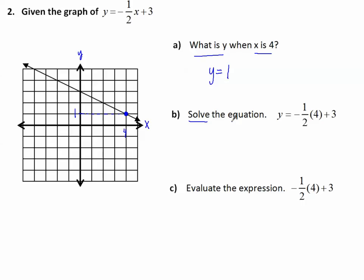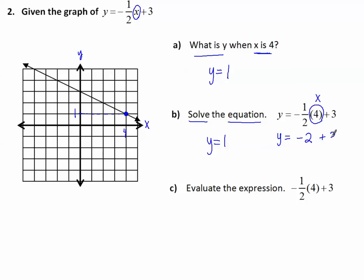Part B: Solve the equation y equals negative 1 half times 4 plus 3. Notice the equation is almost exactly the same, but we replaced x with 4. This is saying the same thing as Part A — x is 4. We can go to the graph to find y is 1. We can also evaluate using order of operations: negative 1 half times 4 is negative 2, and negative 2 plus 3 is 1. We did it correctly.